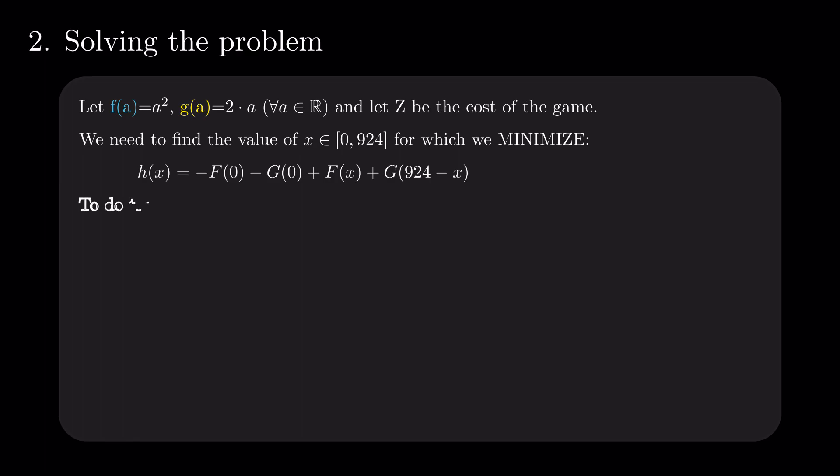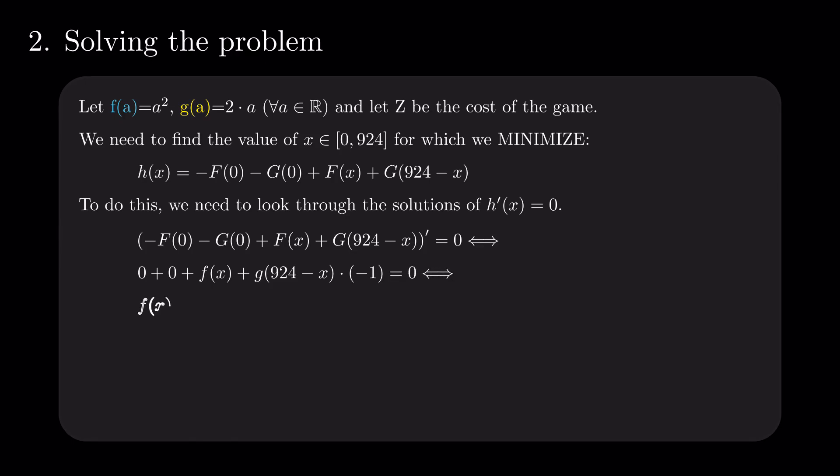We need to look through the solutions of h derivative of x equals 0. Using the fact that f of 0 and g of 0 are constants, and capital F and capital G are the primitives of f and g, we get that f of x equals g of 924 minus x.